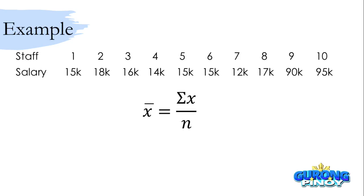We'll be right back. All right, so we know that our mean here will be 30.7 thousand. I hope you got the correct answer.